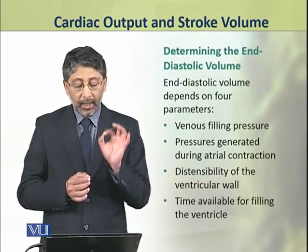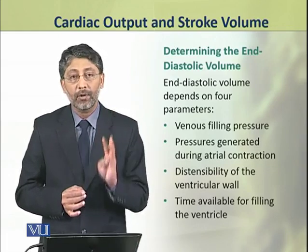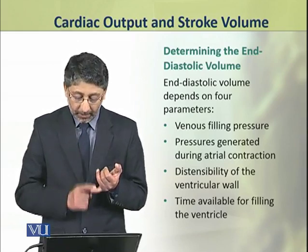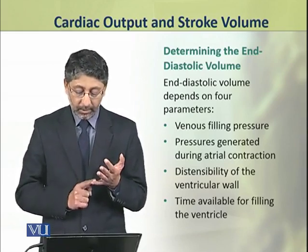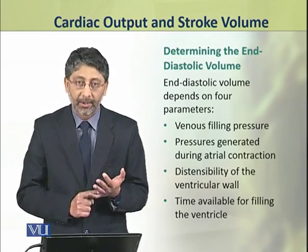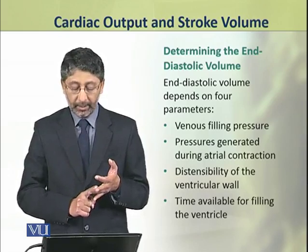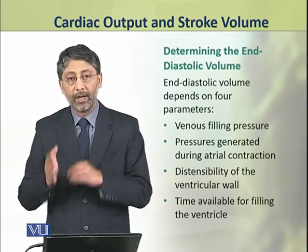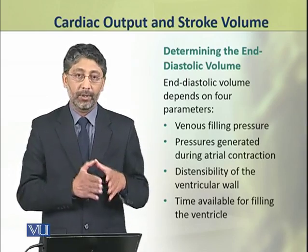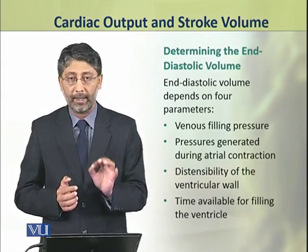The end diastolic volume depends on four parameters. Number one, venous filling pressure. Number two, pressure generated during atrial contraction. Number three, distensibility — any expansion of the ventricular wall. And number four, the time available for filling the ventricle.